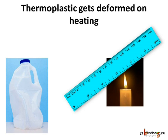Not all plastics are the same in properties and strength. If we hold a ruler made of plastic near a candle flame, it will become soft and will bend easily. Few bottles or containers get deformed if we pour hot liquid in them. Such plastics that get deformed easily on heating and can be bent easily are known as thermoplastics. Polythene, PVC etc. are common thermoplastics that we use regularly.